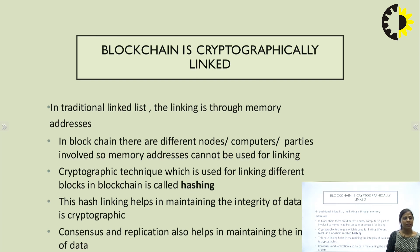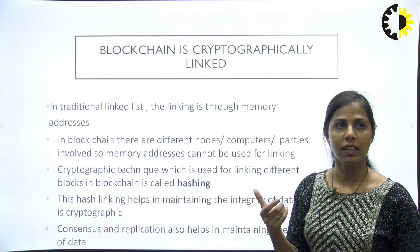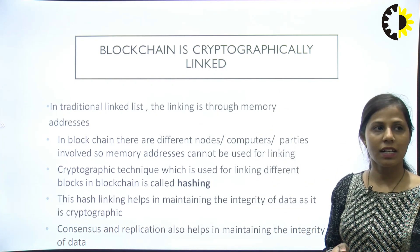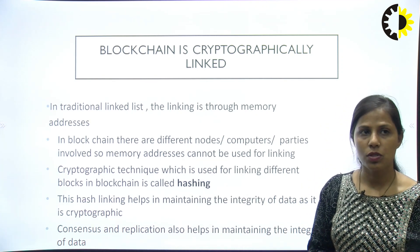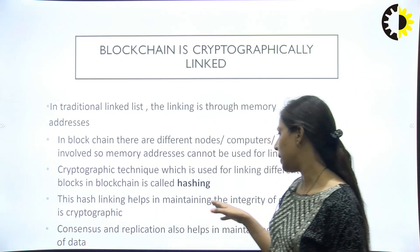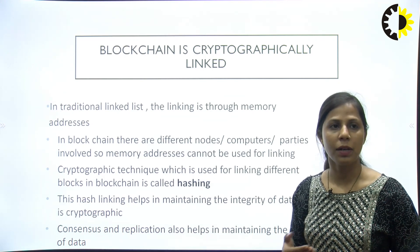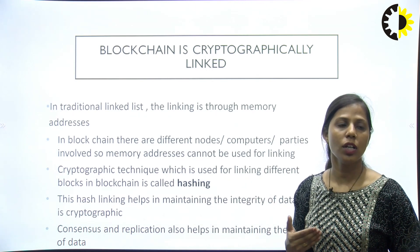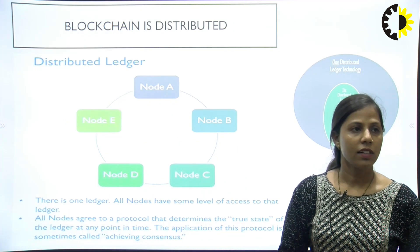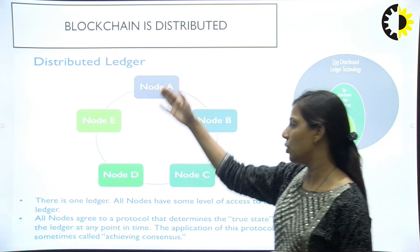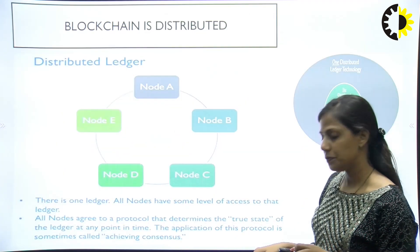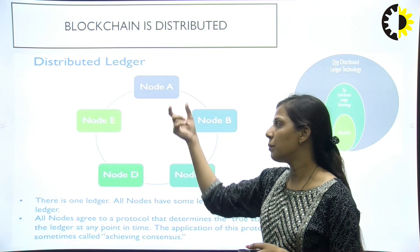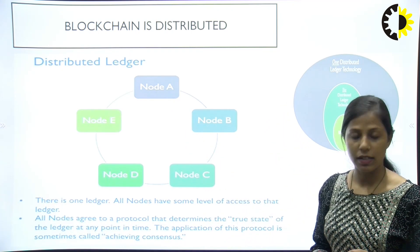Blockchain is cryptographically linked — we have a series of blocks linked through a cryptographic process using hashing. These nodes use connectivity through the hashing technique. Hash linking helps maintain the integrity of the data — you cannot come and update data unless you have the hash value. Blockchain is distributed, meaning different nodes each have their own local copy, and any update on one node is replicated to all other nodes.